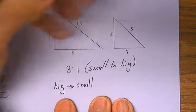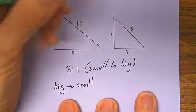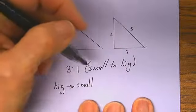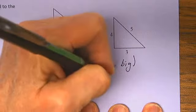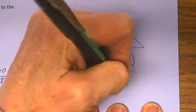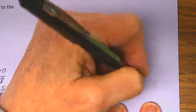We're going from big to the small, then we are dividing by 3, and then it's 1 to 3, or 1 to 3.